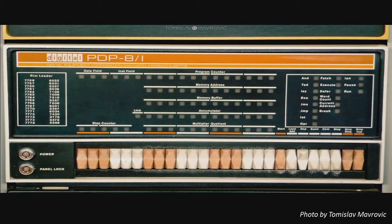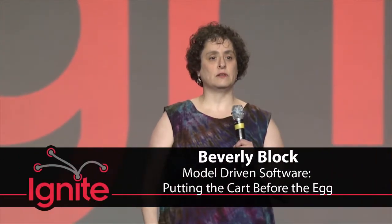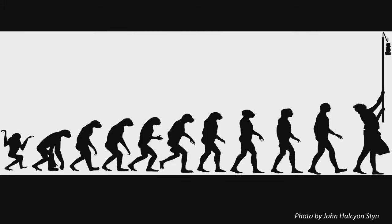We model everything. We model when we use language. When the first computer users got tired of pushing those buttons on the front of the computer, they developed assembly. Assembly language models what's happening on the computer. And as time went on, other languages were developed, but they're all modeling what's on the computer. So there was evolution within the world of computer language, but the rest of the system wasn't really changing much.